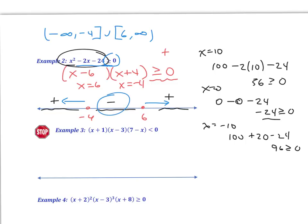A couple of things you have to interpret: what inequality do you have? That determines whether you want positive or negative values, and then pay attention to the inequality to decide whether you need parentheses or brackets.